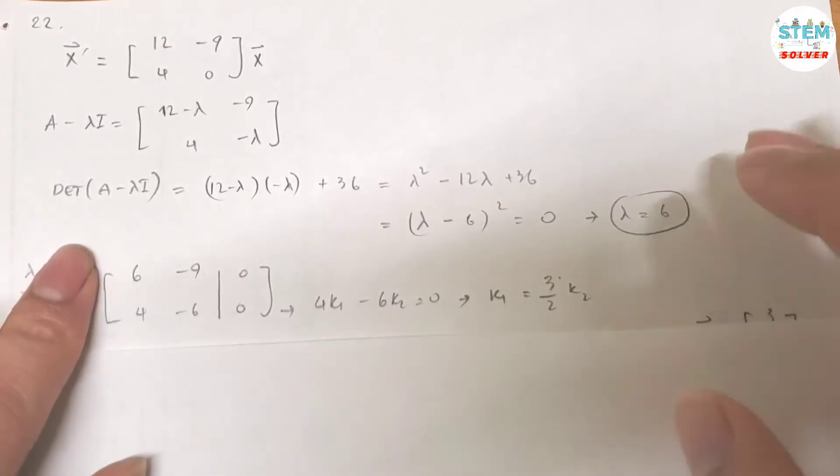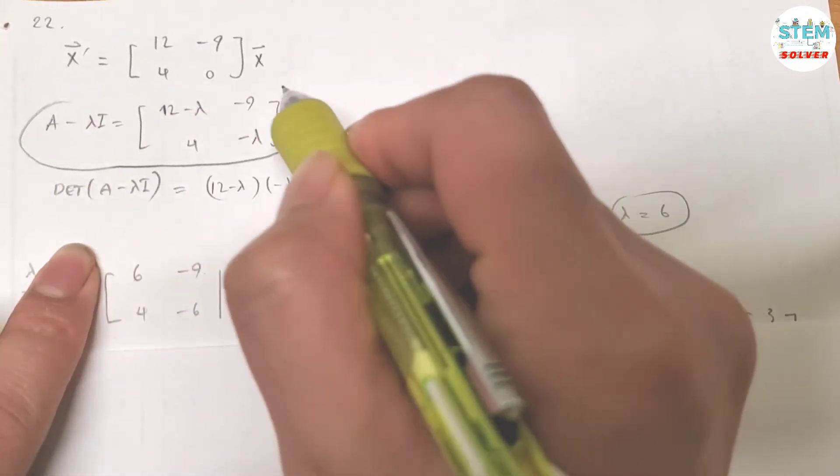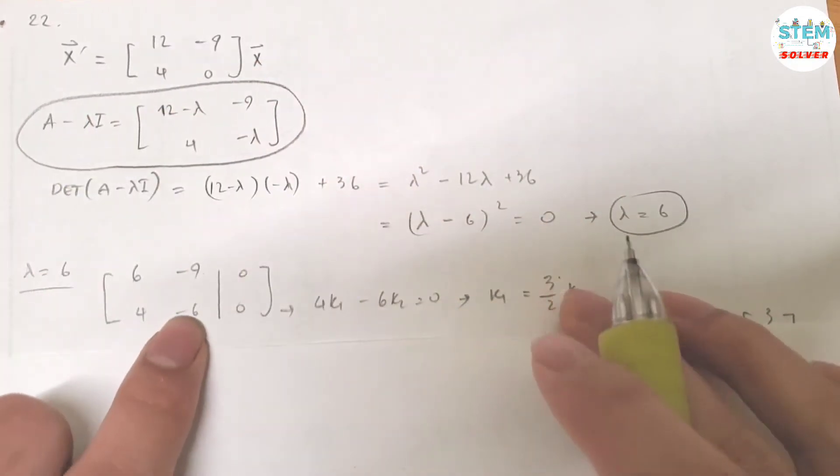So for lambda equals 6, plug it into this matrix. That gives you this matrix, and then augment it with 0.